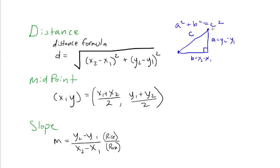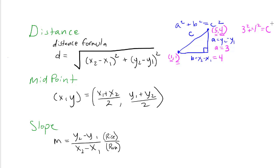Suppose my first point was (5, 4) and my next point was (1, 1). The difference in y's is y2 minus y1, which is 4 minus 1, or 3 — that's one leg of my right triangle, a equals 3. The difference in x is 5 minus 1, a distance of 4 — my b, the other leg, is 4. By the Pythagorean theorem: 3 squared plus 4 squared equals c squared. So c equals the square root of 9 plus 16, which is the square root of 25, which is simply 5.